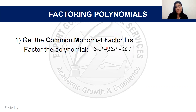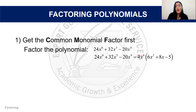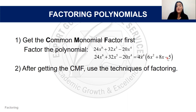Regarding the numerical coefficients 24, 32, and 20, we know their Greatest Common Factor is 4, so we can factor that out. With regards to the variables, we can also factor out x⁴. Therefore, 4x⁴ is our CMF, and this will be the factor that stays in front while the remaining polynomial stays behind.